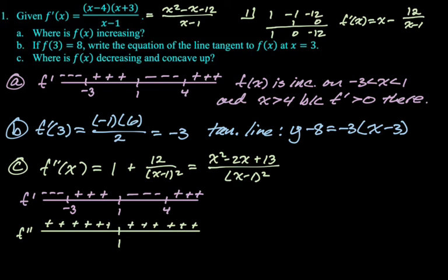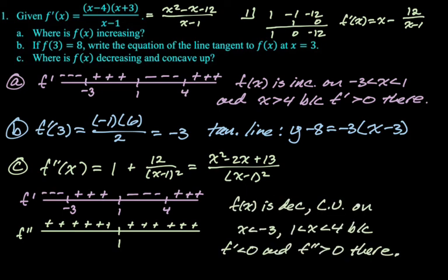And then the question was decreasing and concave up. Okay. So this thing is always concave up. If we had put all negatives, then we would have been like, there is no interval. But it's always concave up. We know that it's decreasing for x less than negative 3 and between 1 and 4. So I'm going to say f of x is decreasing concave up for x less than negative 3 and 1 less than x less than 4 because f prime is less than 0, f double prime is greater than 0 there. So answered and justified.